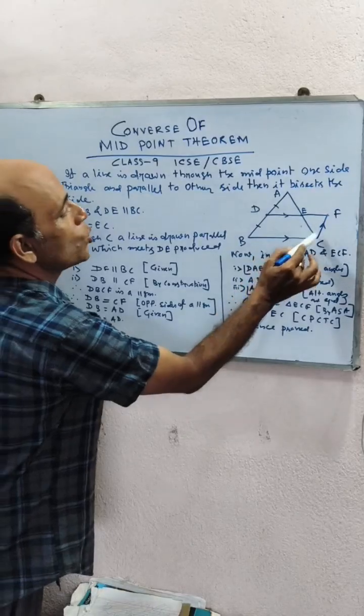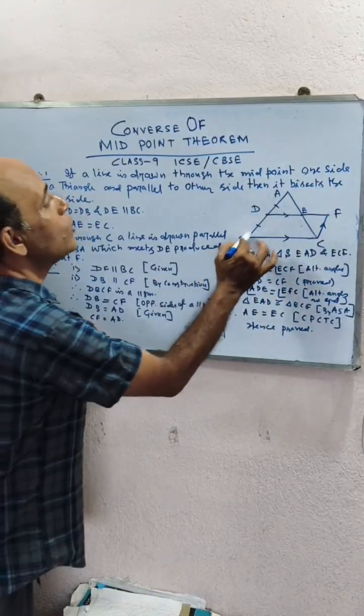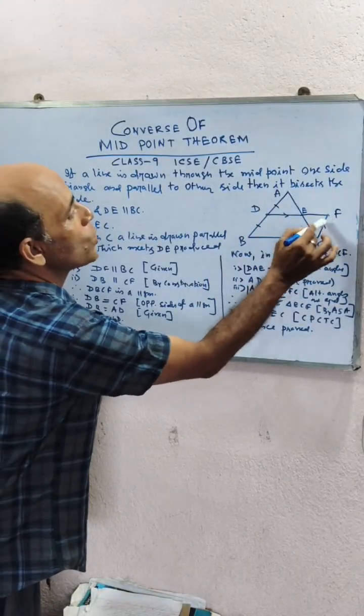Construction: Through C, a line is drawn parallel to BA which means DE produced at F.